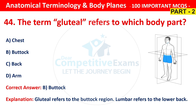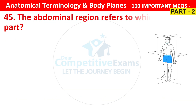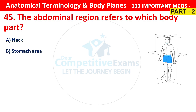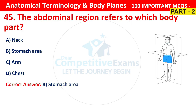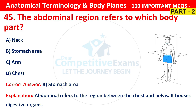Question number 45. The abdominal region refers to which body part? Your options are stomach area, neck, arm or chest. The correct answer is stomach area. Abdominal refers to the region between the chest and pelvis. It houses digestive organs.